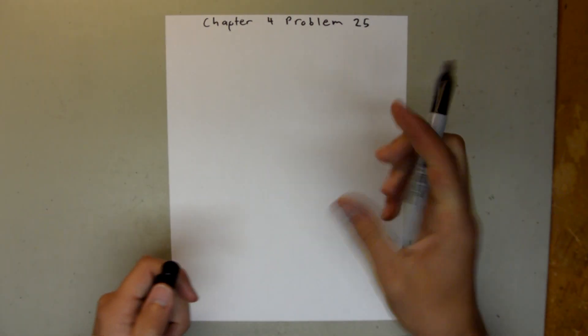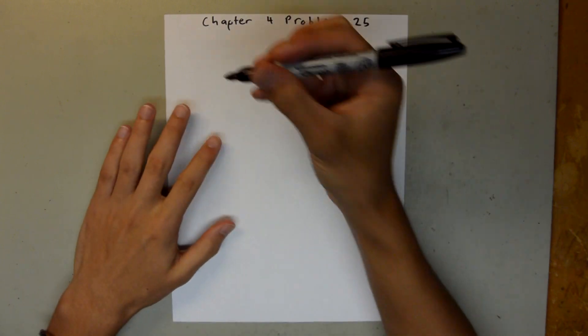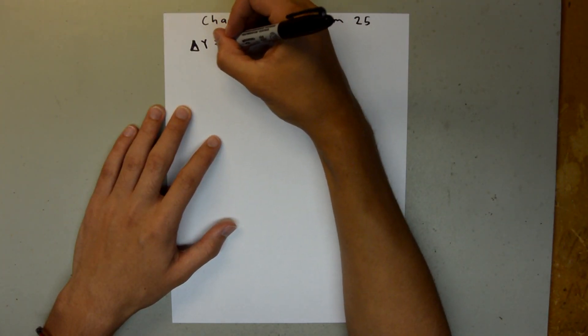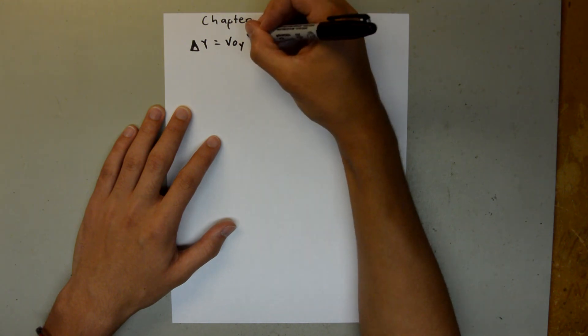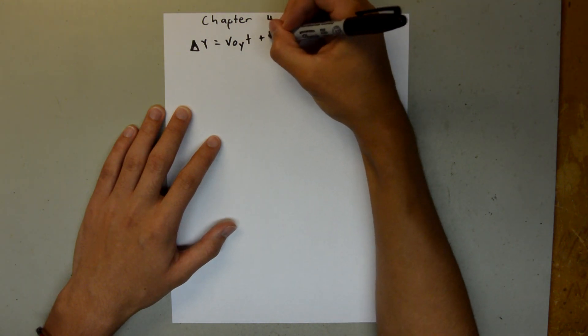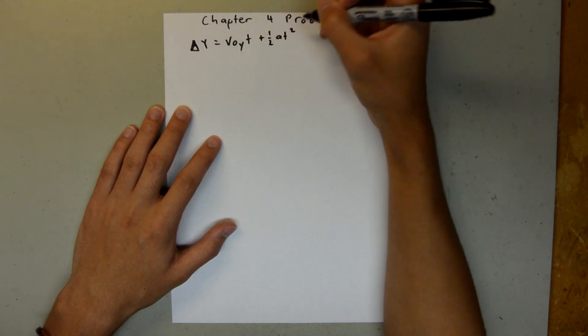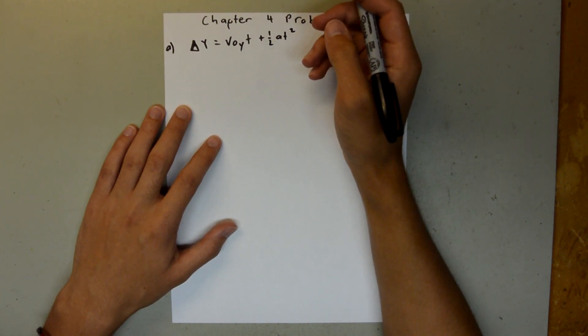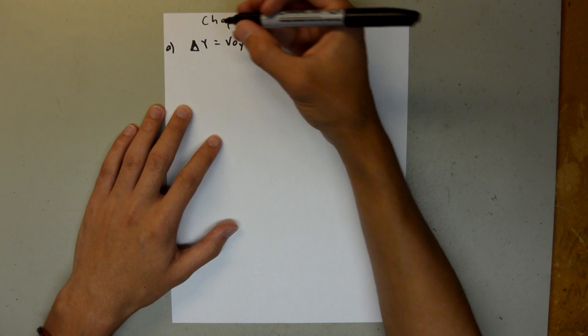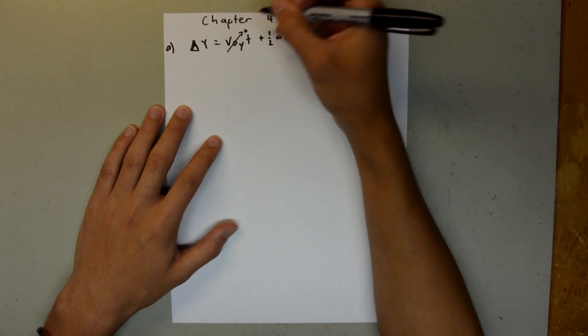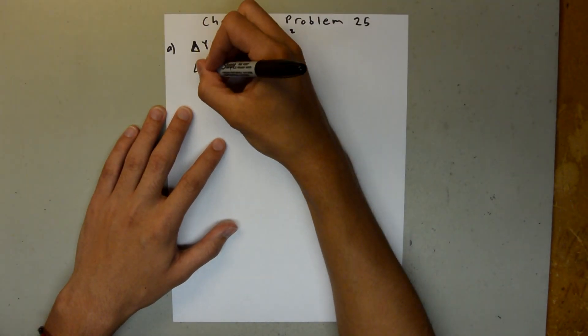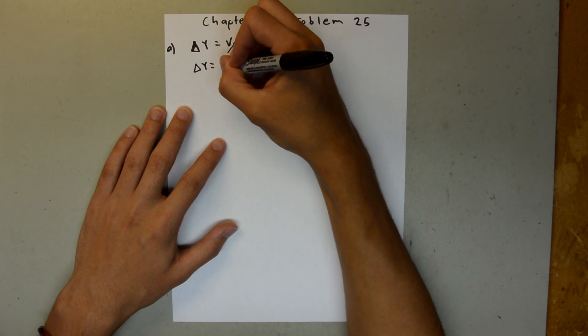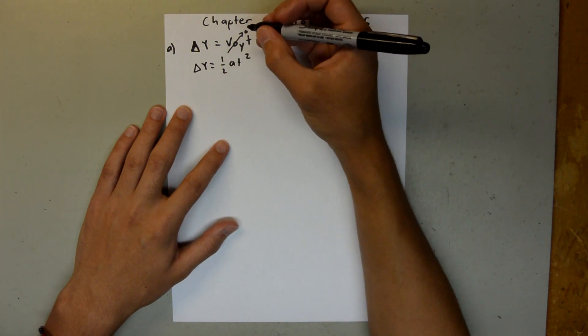So to do this, we need to use the equation delta y is equal to the initial velocity in the y times t plus one-half at squared. This is for part a, and we're told that the dart is thrown horizontally, so there's no initial velocity in the y direction. So our delta y is equal to one-half at squared, and we have all those values.